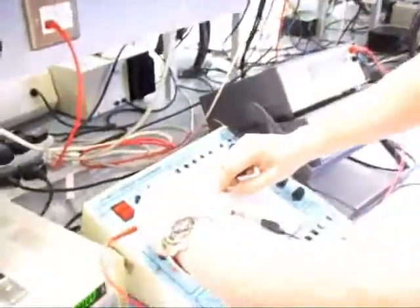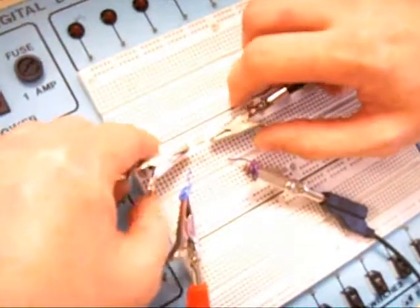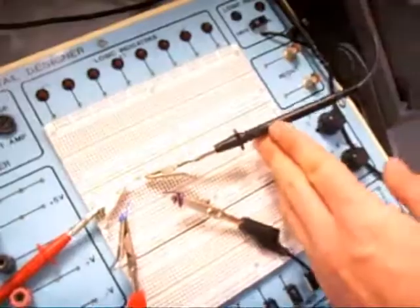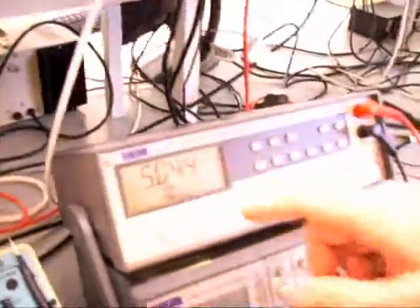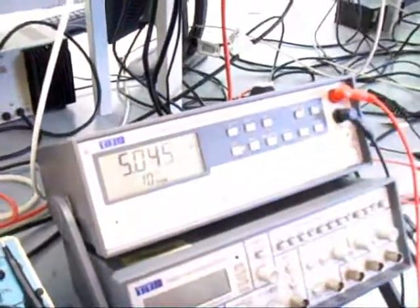Now we place the probes on either side of the resistor. The circuit doesn't have to be broken to measure voltage. And now we're measuring the voltage across the resistor, which we see to be five volts. As this circuit only has a single resistive element, all the voltage is dropped across the resistor. So that's why we see all five volts.